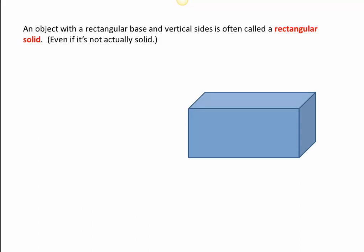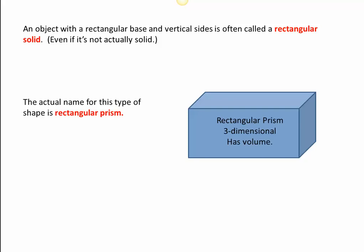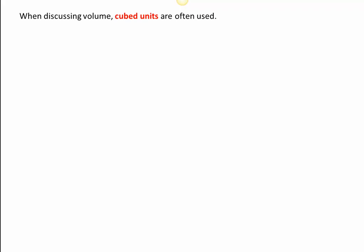An object that has a rectangular base and vertical sides is sometimes called a rectangular solid, but that's just kind of a layman's name. The proper name for this is rectangular prism. When we talk about volume, we often use cubed units.